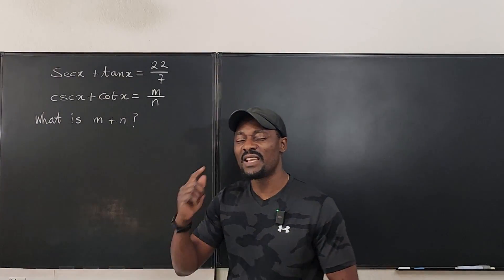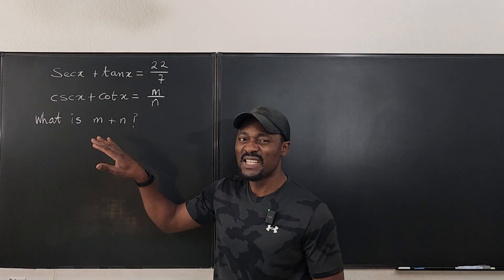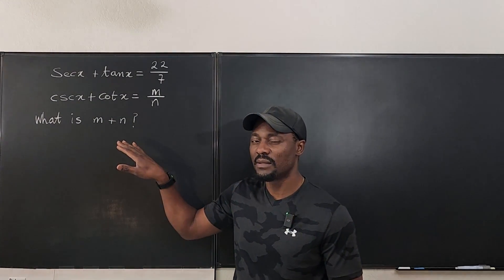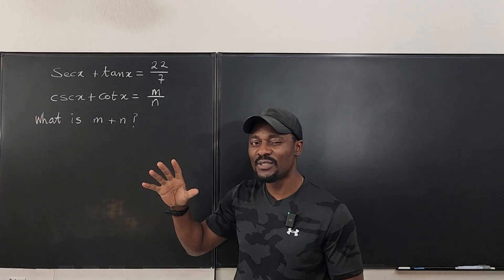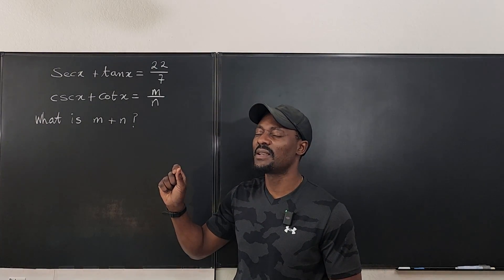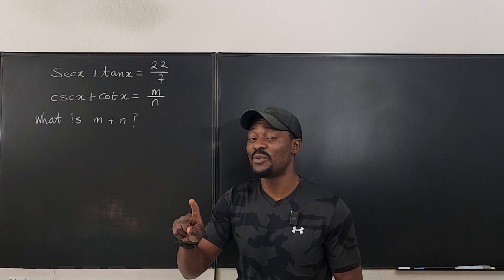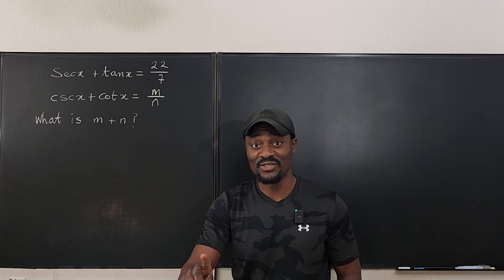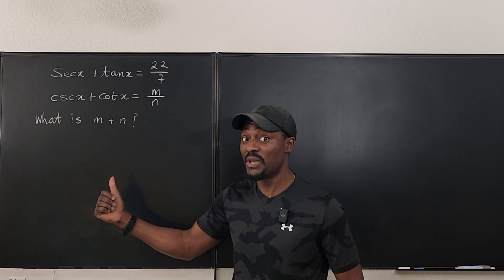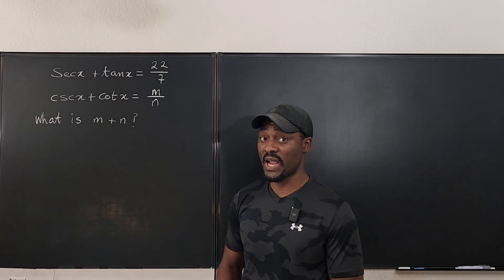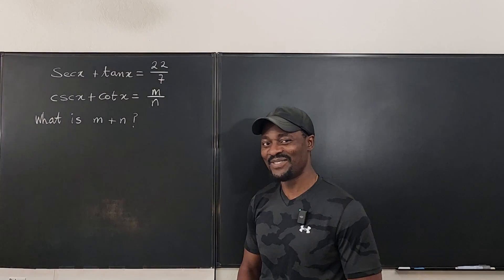So you start asking, what trig identity do I know that connects secant with tangent? What about secant squared x minus tangent squared x equals 1 from the Pythagorean trig identity? And that's the secret to solving this one. It is not hard, but it will be hard if you do not recall what I just said. Let's get into the video.